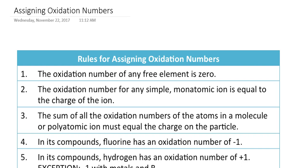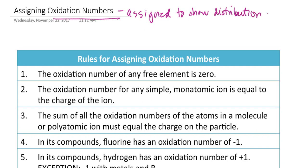Oxidation numbers are numbers assigned to show the distribution of electrons in the compound. These numbers are not full ionic charges and we shouldn't treat them as such. If an atom in a covalent compound has a negative oxidation number, that implies the electrons are gravitating more towards that atom than towards those atoms with positive oxidation numbers.